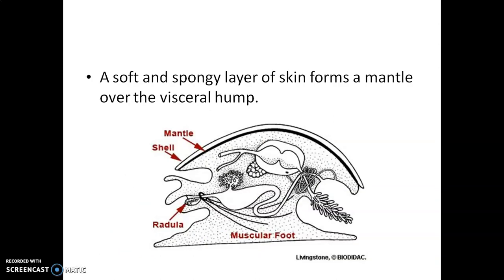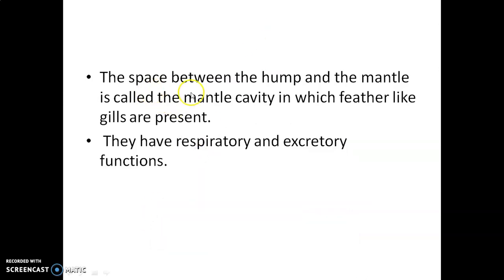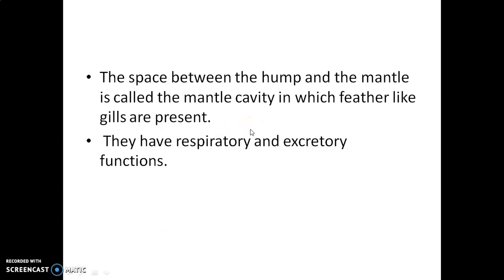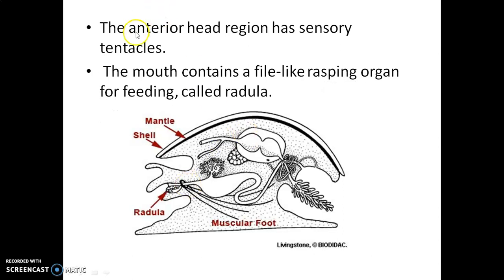A soft and spongy layer of skin forms a mantle over the visceral hump. The space between the hump and the mantle is called the mantle cavity. Feather-like gills are present in the mantle cavity and serve both respiratory and excretory functions. The anterior head region has a sensory tentacle.